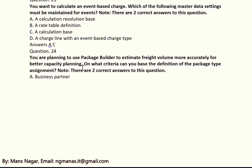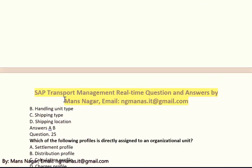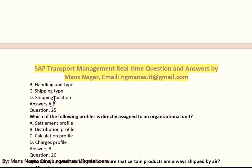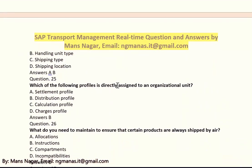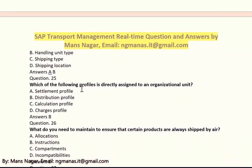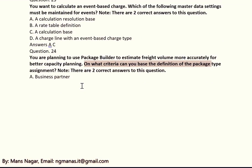For better capacity planning, on which criteria can you base the definition of the package type assignment? The answer is A and C, which is the BP — the keeping type — and business partners, like customers and suppliers.